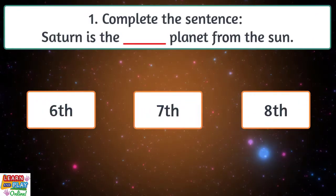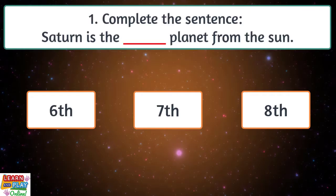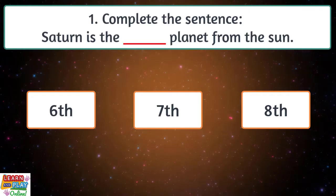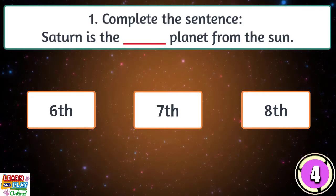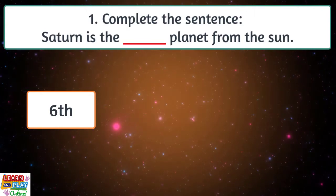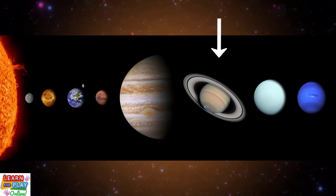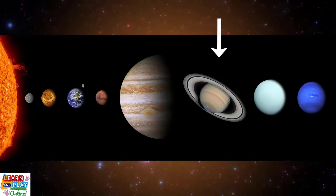Question 1. Complete the sentence. Saturn is the planet from the sun. Is it 6th, 7th or 8th? Saturn is an outer gas giant and it is the 6th planet from the sun in our solar system.